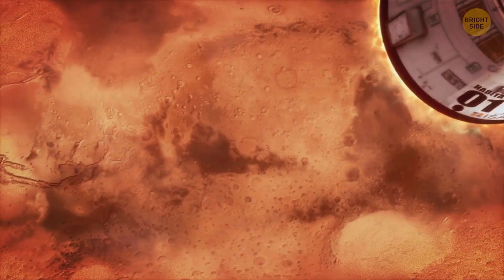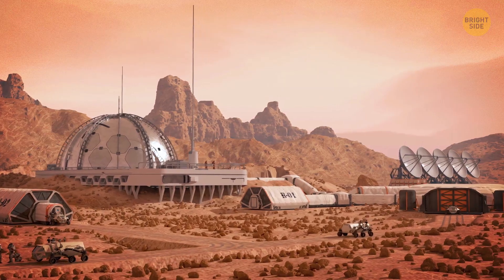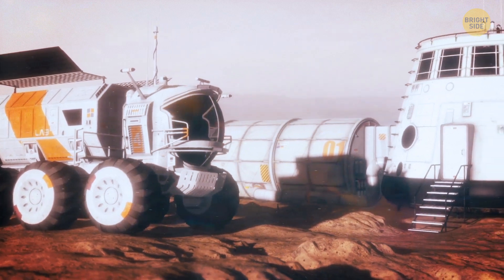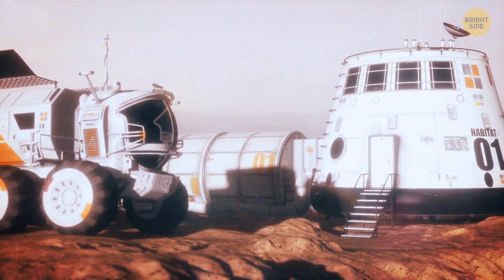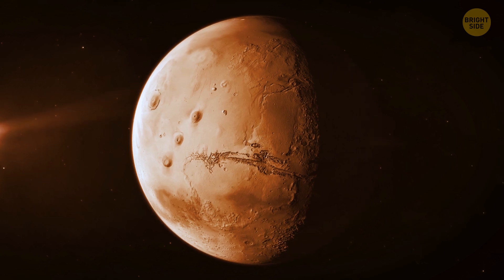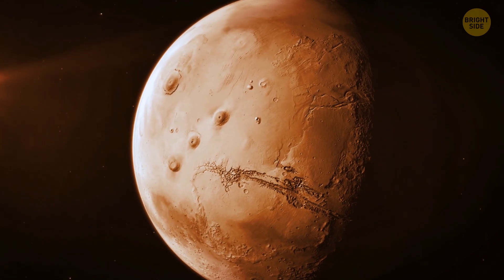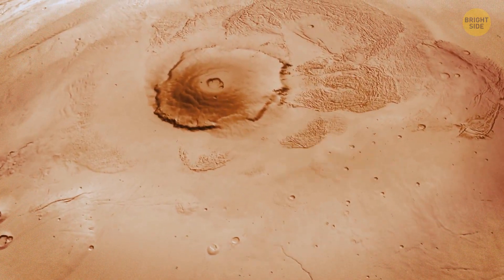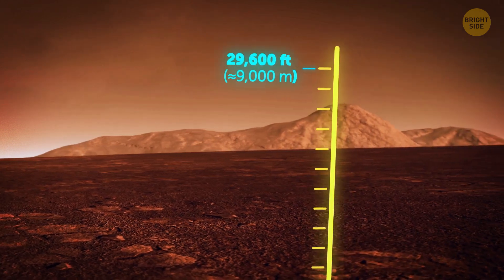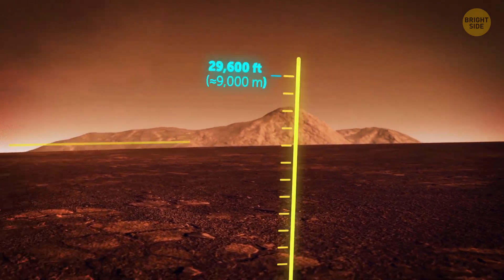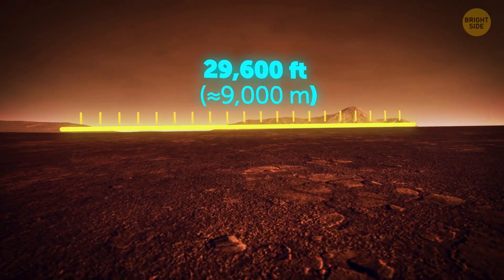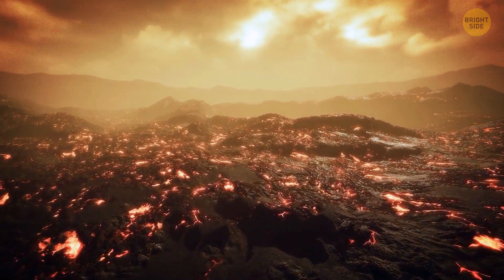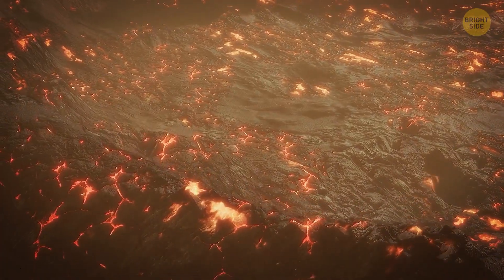That's why this discovery might indicate a promising new location to search for life, as well as a potential destination for future human and robotic exploration. The structure is still awaiting its official name. At the moment, it's referred to as the Noctis volcano. It reaches a height of 29,600 feet and spans an impressive 280 miles across. Such a giant size indicates that the volcano has been active for a very long time.